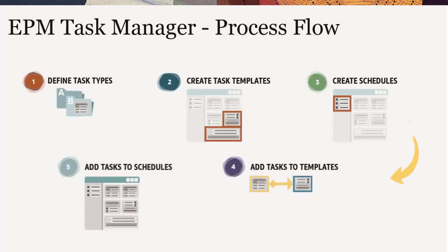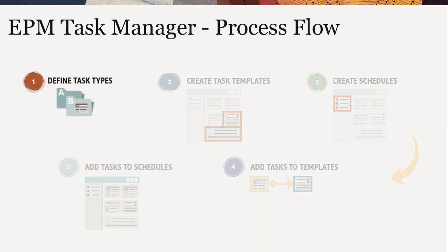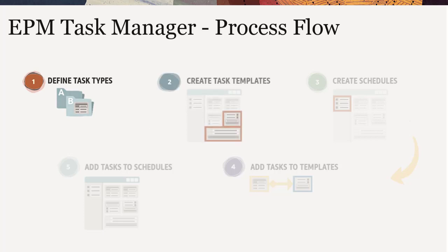When you're ready to define tasks, start by creating task types to identify and categorize tasks that are commonly used in your business process. Basic and parent tasks are predefined task types included in Task Manager. You can add more task types later as you create more tasks. Then create task templates for repeatable tasks. Task templates are also used as a basis for creating schedules.